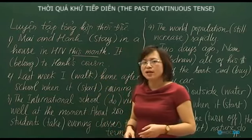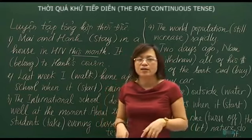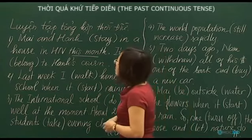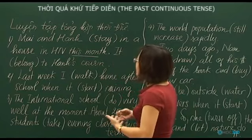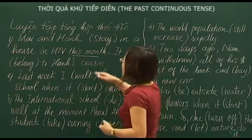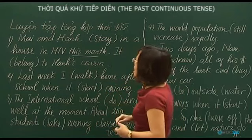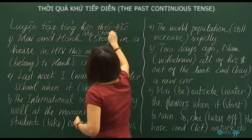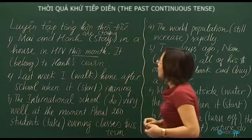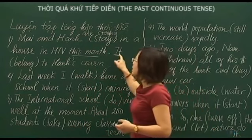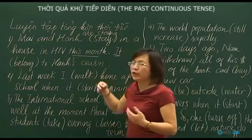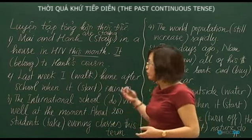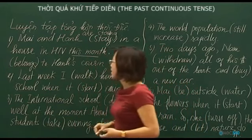As we learned with present continuous: an action occurring over a longer period — even if not happening right at the moment of speaking — uses present continuous. 'My and Hạnh are staying in Hanoi this month.' It belongs to Hạnh's cousin — 'it' is a house. For a permanent/habitual fact: 'It belongs to Hạnh's cousin' — we add -s after the verb.